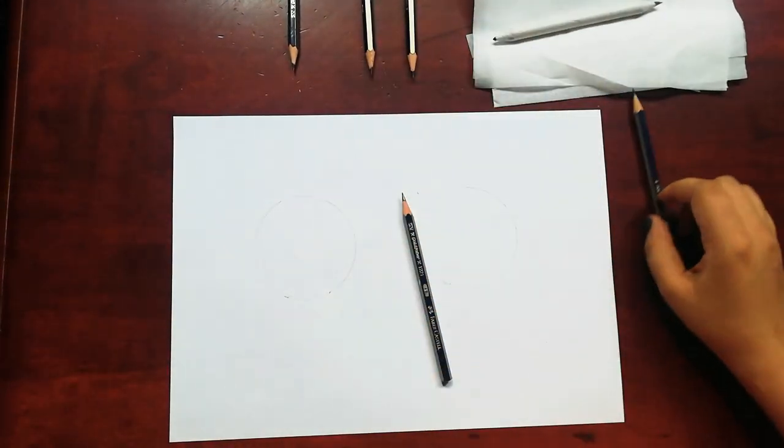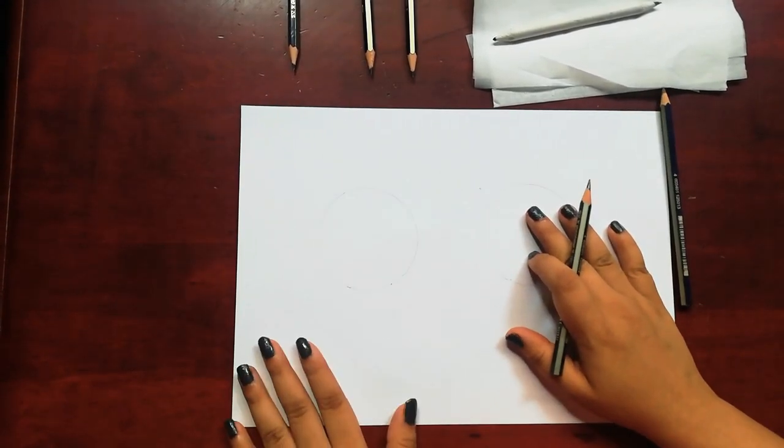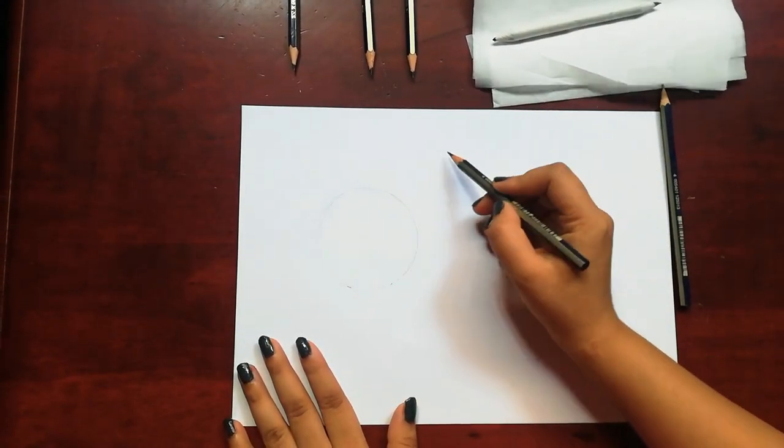Here I have two circles. I've drawn two circles over here and I will start with shading them. This is the source of light, so I'm going to keep the left area darker than the right. I'll start shading.